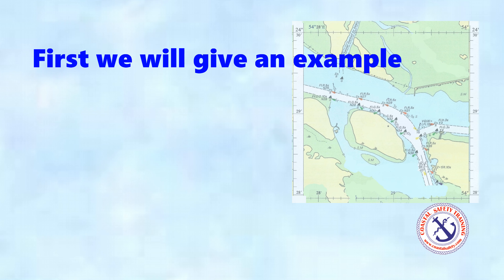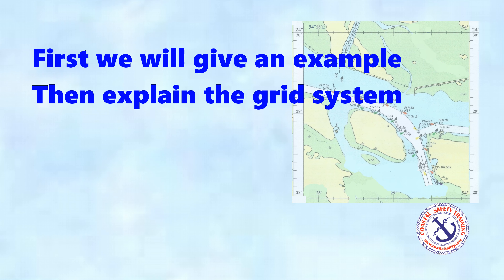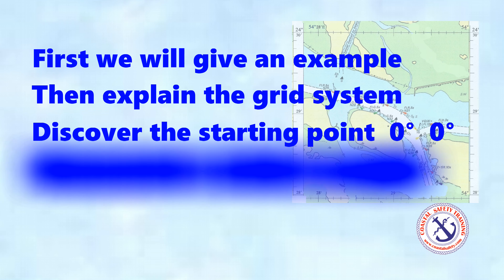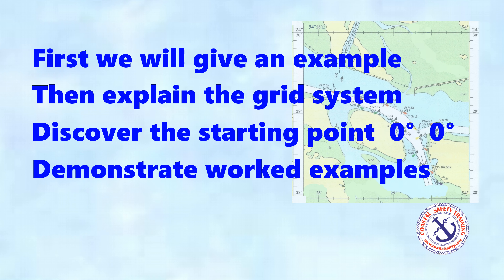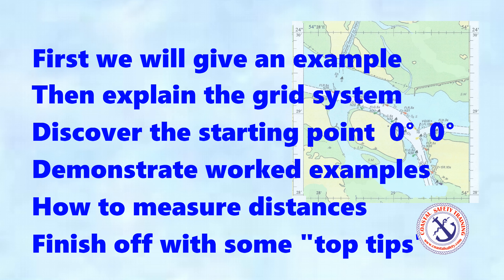First we'll look at an example of latitude and longitude, then we'll explain how the grid system works, discover where the starting point of zero degrees, zero degrees is, demonstrate through some worked examples, then we'll talk about how to measure distances, and we'll finish off with some top tips.